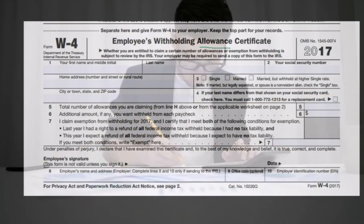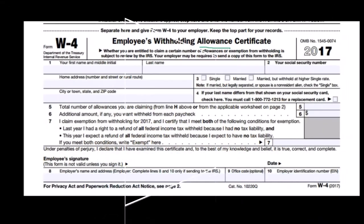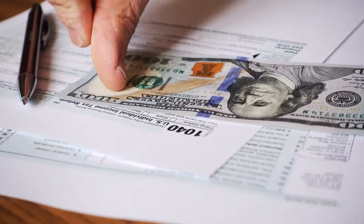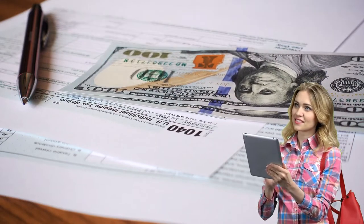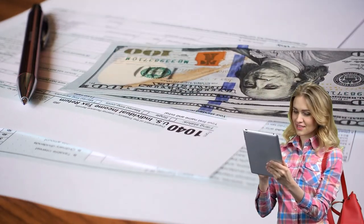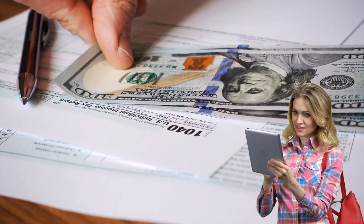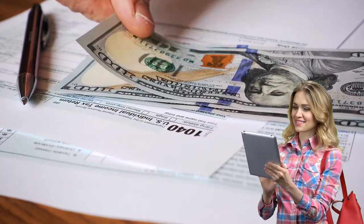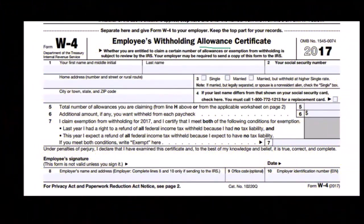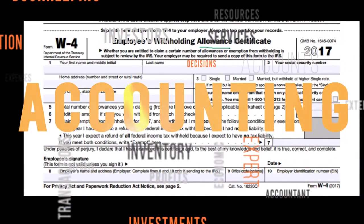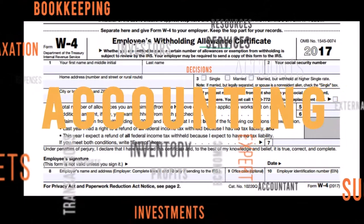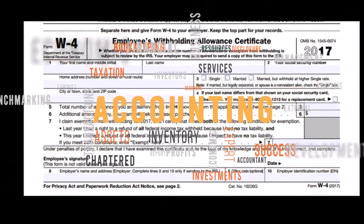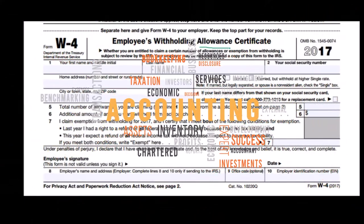The more exemptions we have, the lower our tax will be — and the same applies here. The more allowances we claim on the W-4, the less money our employer takes out of our wages, and the larger our paycheck will be. However, at the end of the year, we may be more likely to have a smaller refund or actually owe money.